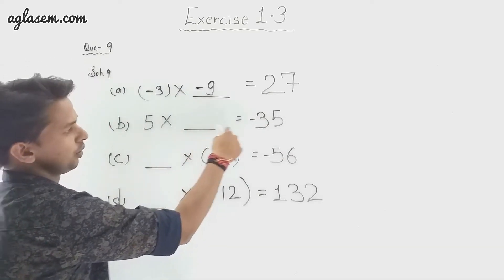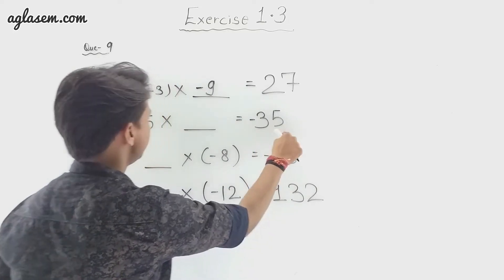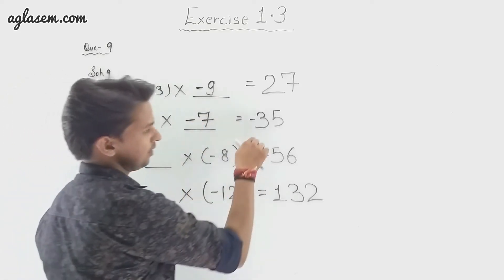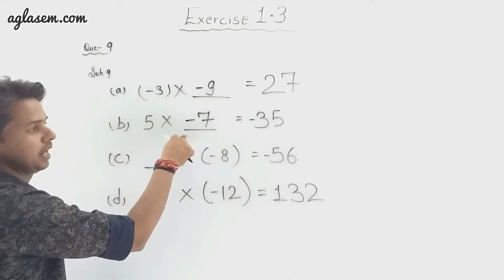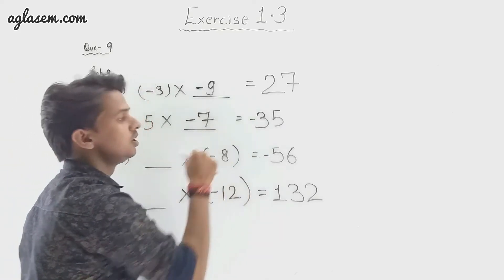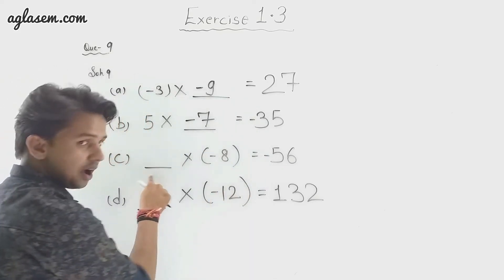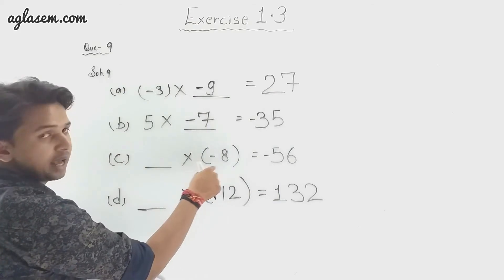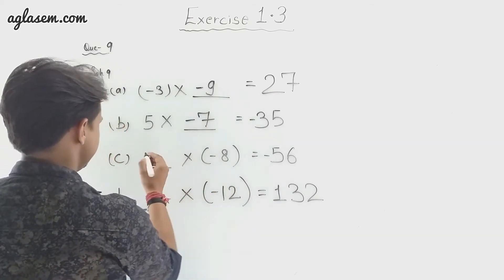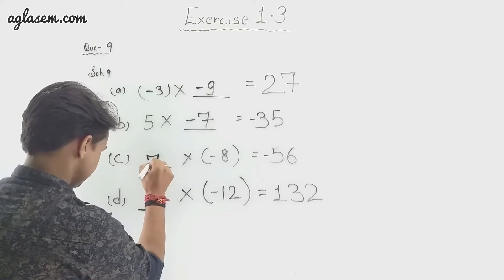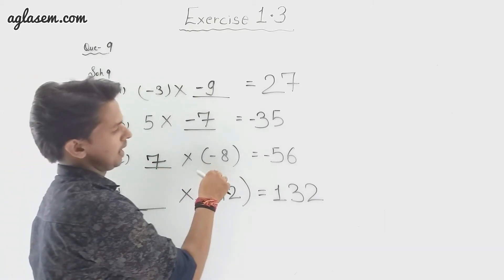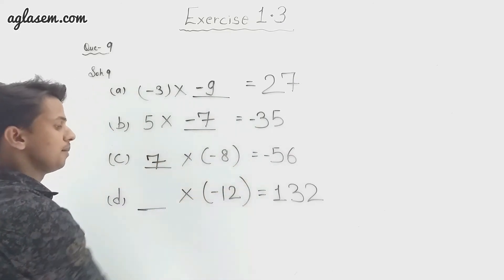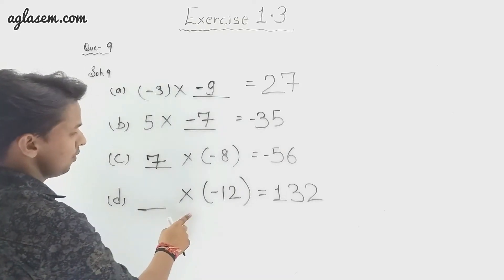Part b: blank multiplied by 5 equals minus 35. We fill in minus 7, because plus times minus gives minus. Part c: 7 multiplied by blank equals minus 56. We fill in minus 8, so 7 multiplied by minus 8 equals minus 56, because plus times minus makes minus.